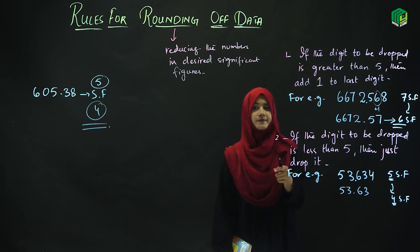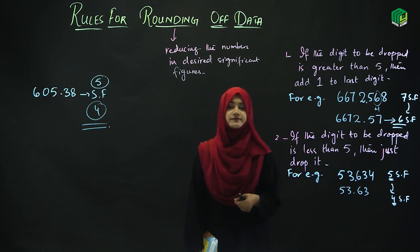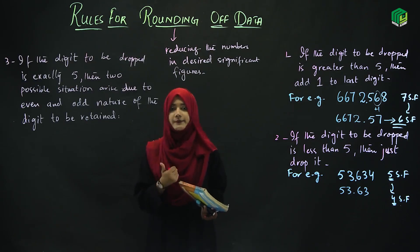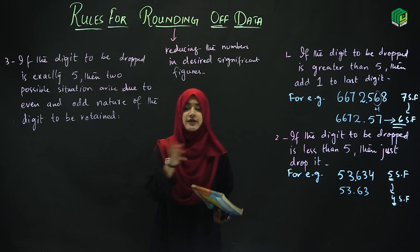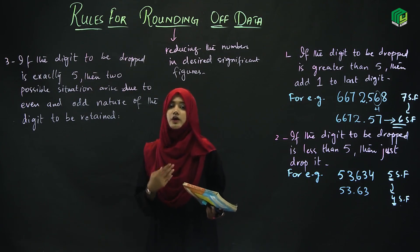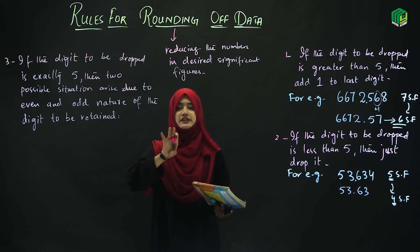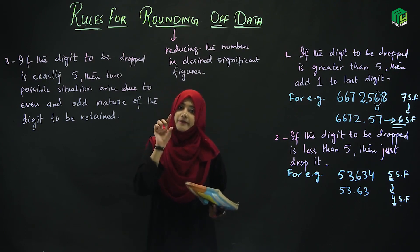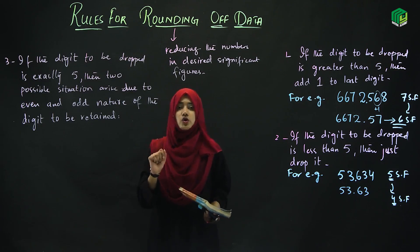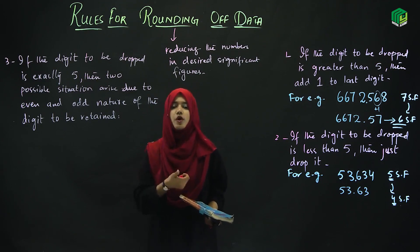The third rule is that when the digit we drop is exactly 5, then we have two possibilities. What are the two possibilities? The two possibilities depend on the nature of the retained digit. First possibility is that it is even, second is that it is odd.